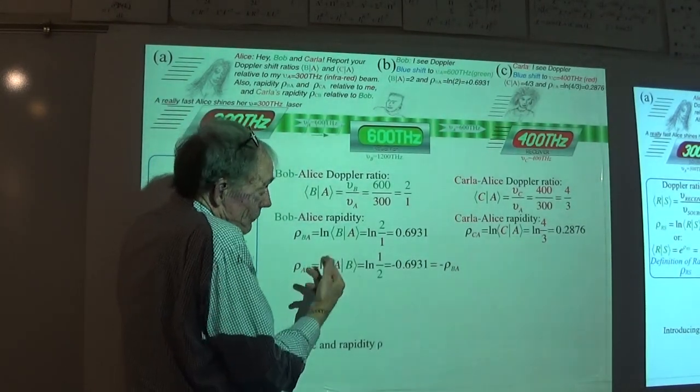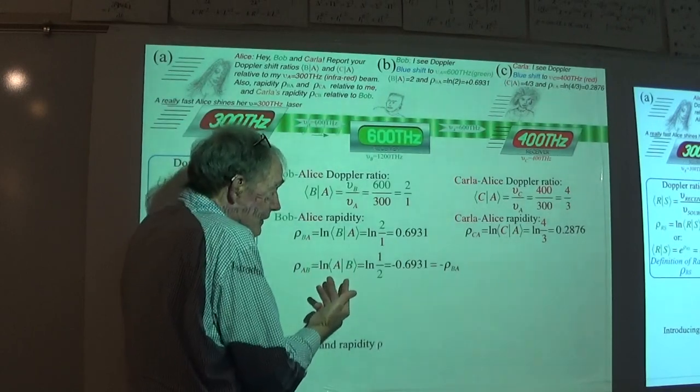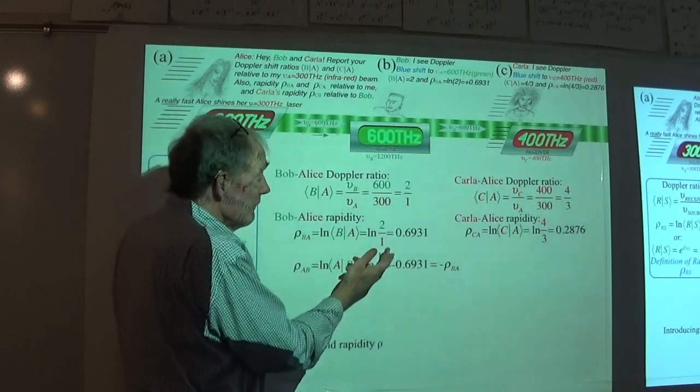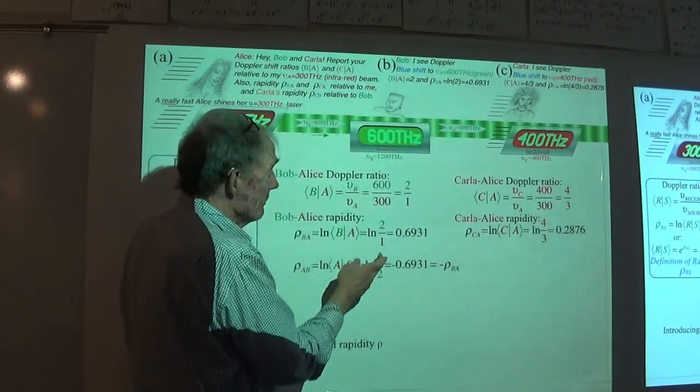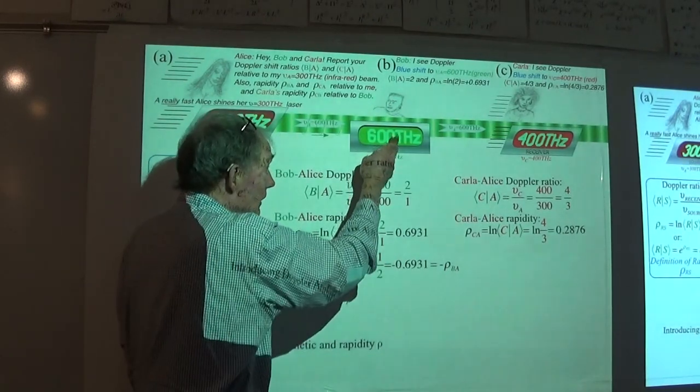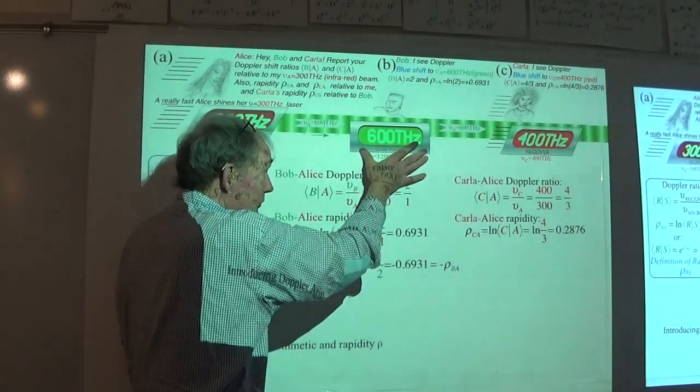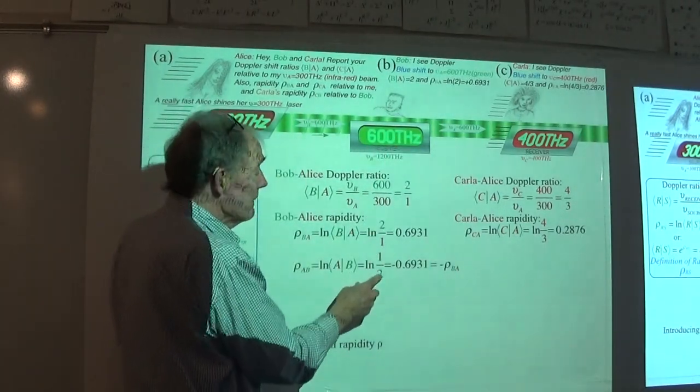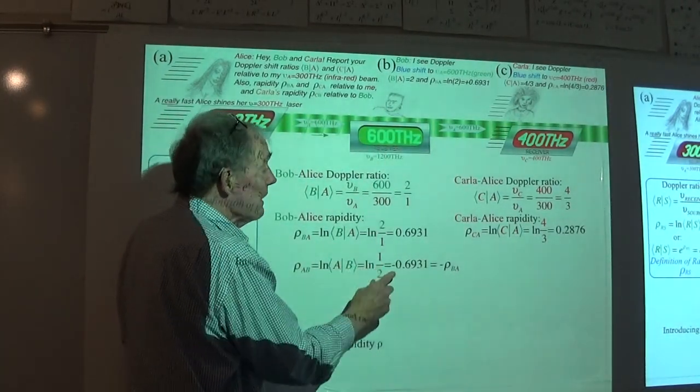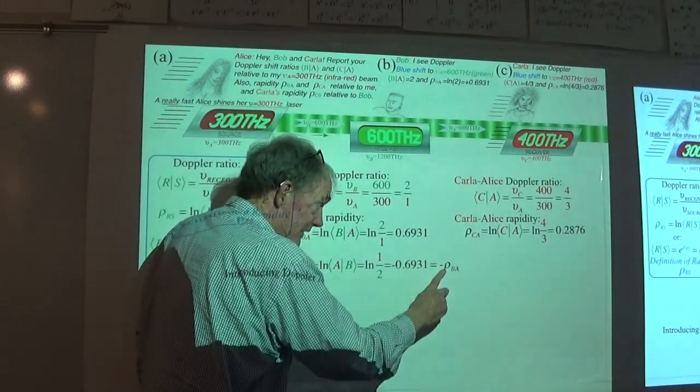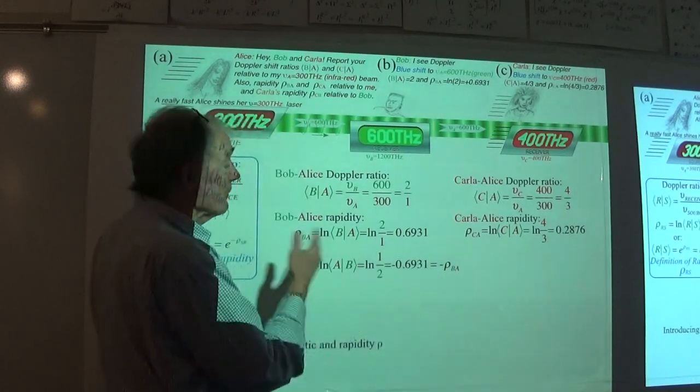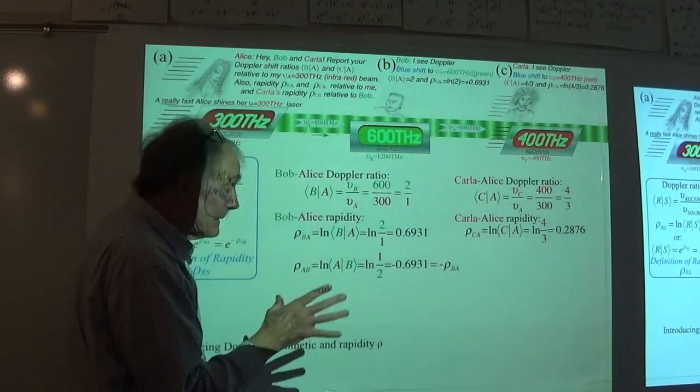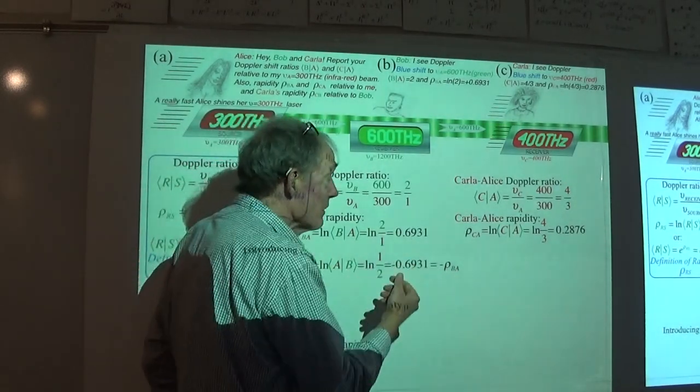And then I could do the experiment in reverse. And I would have the person with this laser being receiving from, if you turn this into a laser and send the light back, that would be the logarithm of the reciprocal. That would be minus. So the relative velocity, Bob to Alice, Alice to Bob.